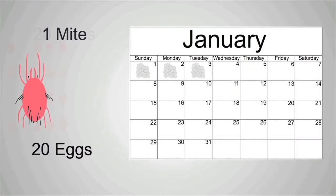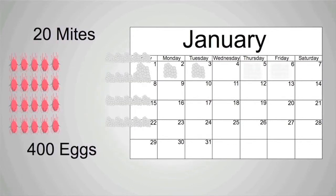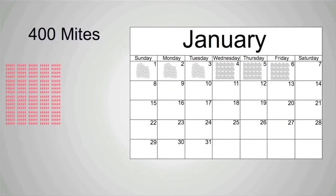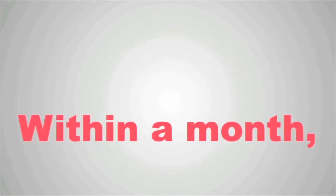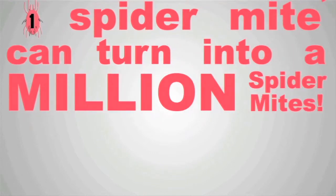A spider mite can lay up to 20 eggs a day. Once hatched, those 20 mites can produce 400 eggs in one day. Soon you could have 8,000 eggs laid in a day. Within a month, one spider mite can turn into a million spider mites.